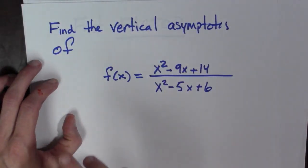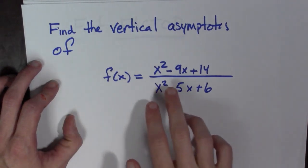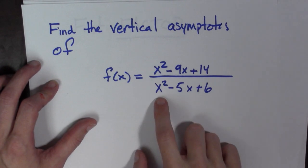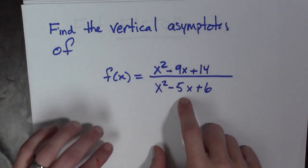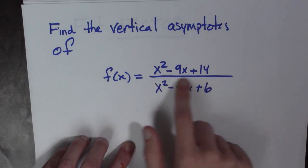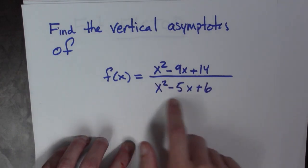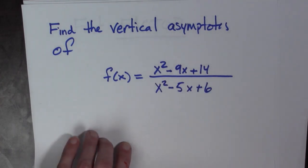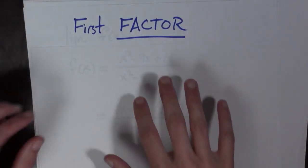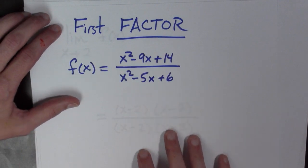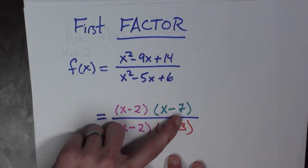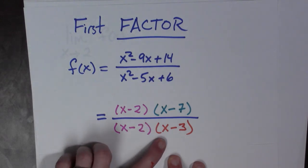Let's see an example. Find the vertical asymptotes of f of x equals x squared minus 9x plus 14, all over x squared minus 5x plus 6. The first thing we need to do is find where the denominator is zero. The best way to do this is to factor. Factoring f of x gives us x minus 2 times x minus 7, all over x minus 2 times x minus 3.